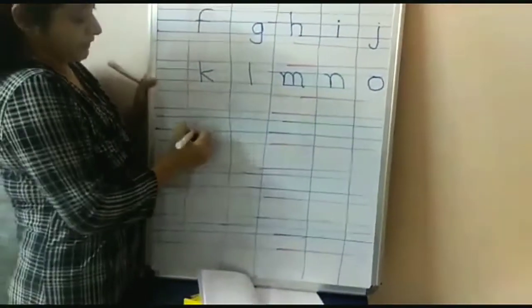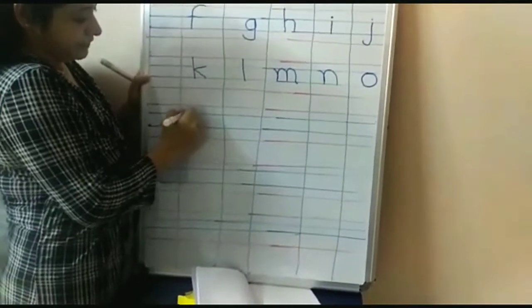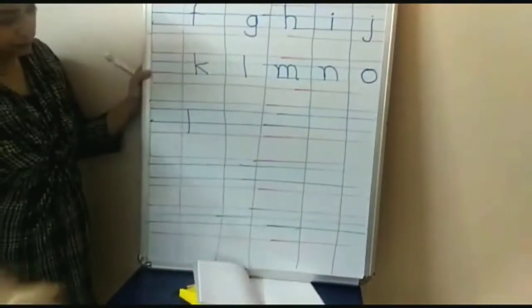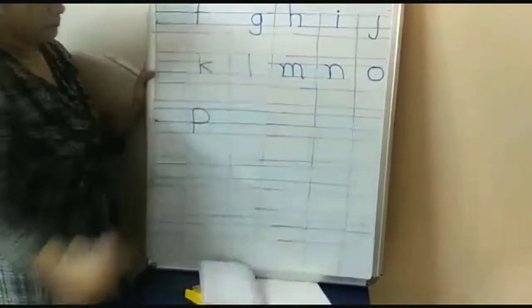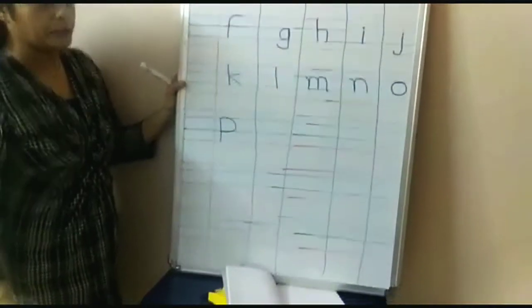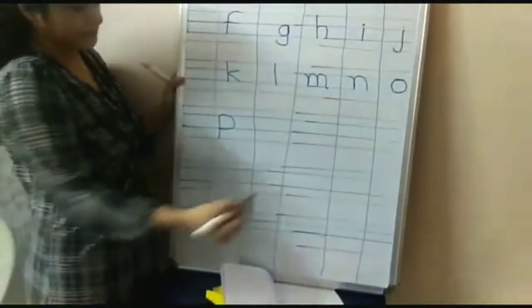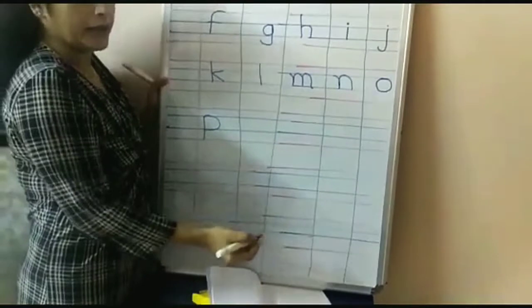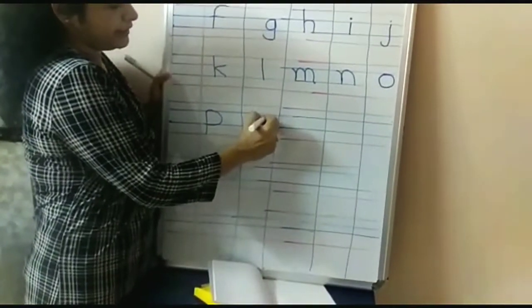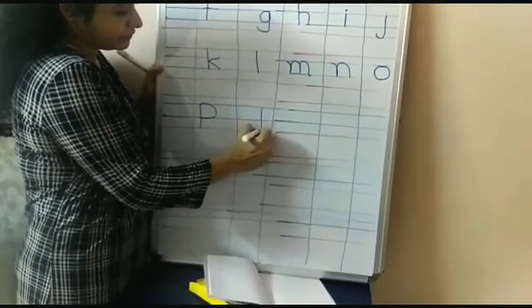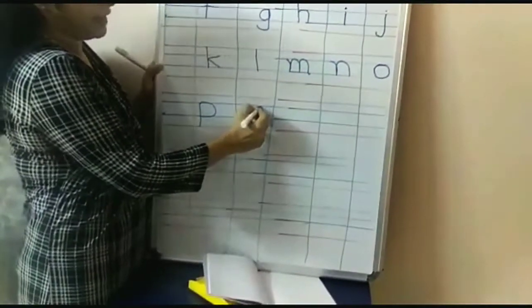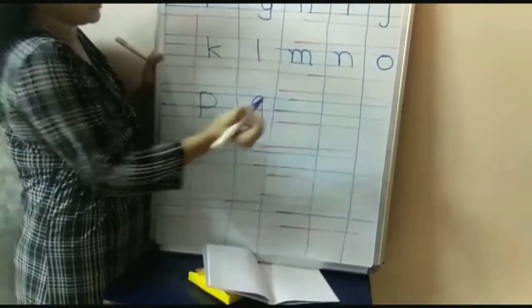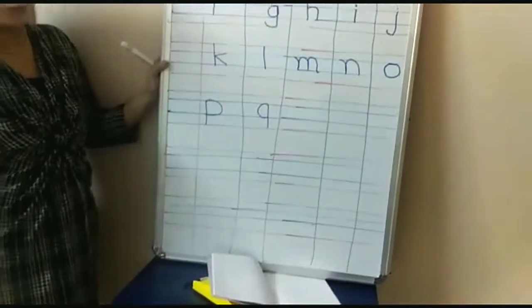Now we'll write P. Make a standing line, blue line to red line down, and make a round — P. Blue line to blue line. Now again, make a standing line, blue line to red line down, and make a round from the opposite side — Q.